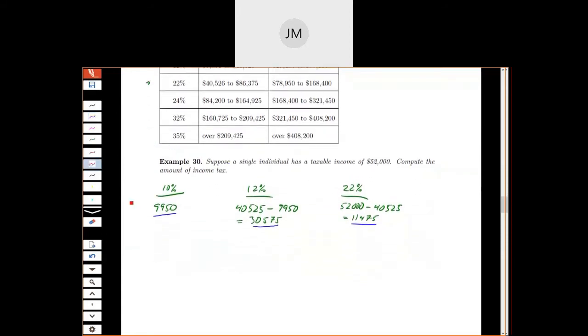So now let's compute the amount of tax. So the tax is going to be just a percentage of that amount of money. So in the 10% bucket, I'm taxing at 10%. So we take 10% of $9,950, and we get $995.